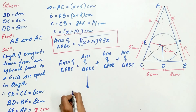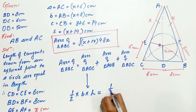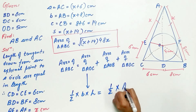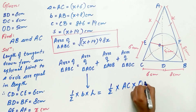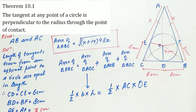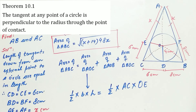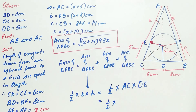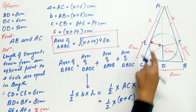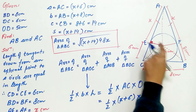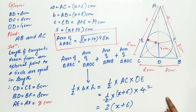To find the area of triangle AOC, we use the formula ½ × base × height, where the base is AC and the height is OE. By Theorem 10.1, the tangent at any point of a circle is perpendicular to the radius through the point of contact. So AC = x+6 cm and OE = 4 cm (the radius). This gives ½ × 4 × (x+6) = 2(x+6).